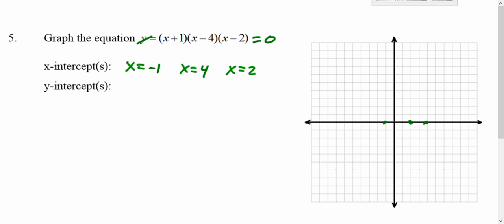For the y-intercept, you plug in 0. So let's plug in 0 for x. We get 0 plus 1 is 1, 0 minus 4 is negative 4, 0 minus 2 is negative 2. Multiply that out, that's 8.